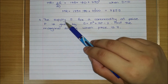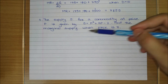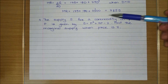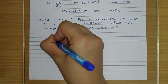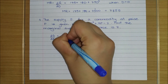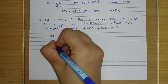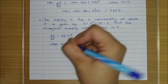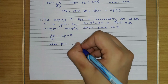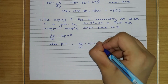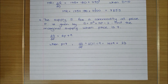Example 4: The supply S for a commodity at price P is given. Find the marginal supply when price is 7. To find marginal supply, differentiate S with respect to P: dS/dP = 2P + 9. When P = 7: dS/dP = 2(7) + 9 = 14 + 9 = 23.